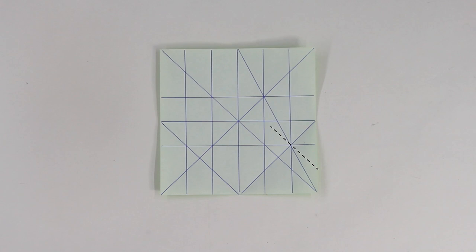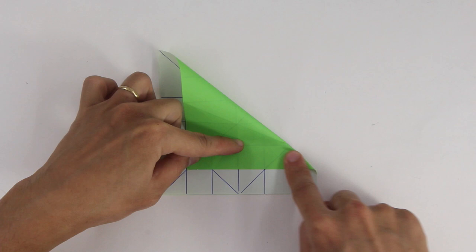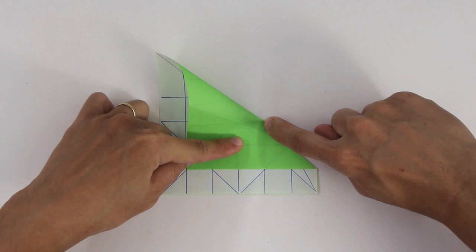Now, make this valley fold on the side of the paper. Take in the corner of the paper up to this reference point and unfold the paper. Fold only up to this point. Now, unfold.